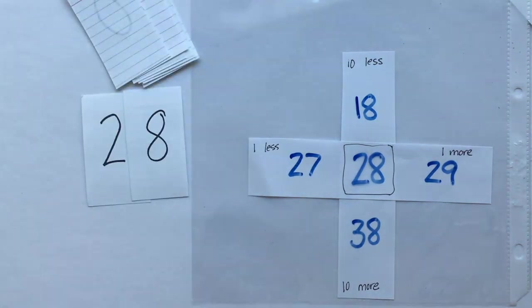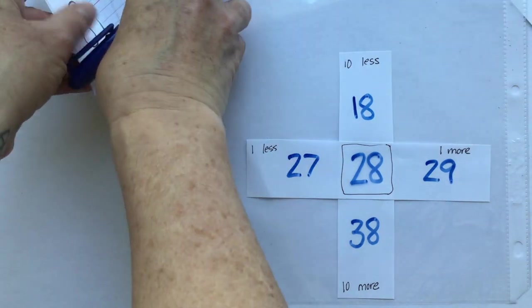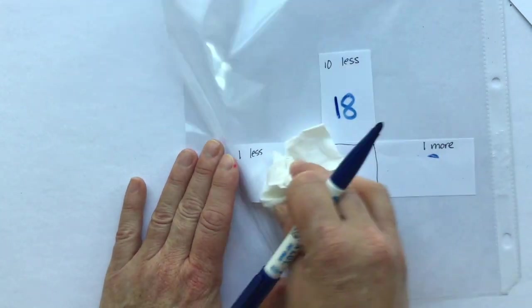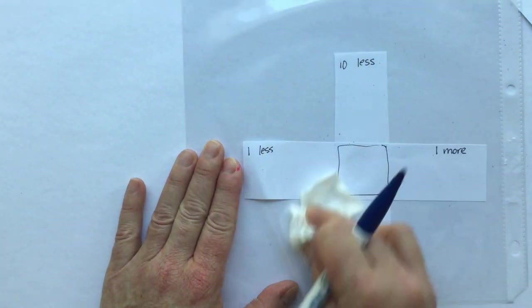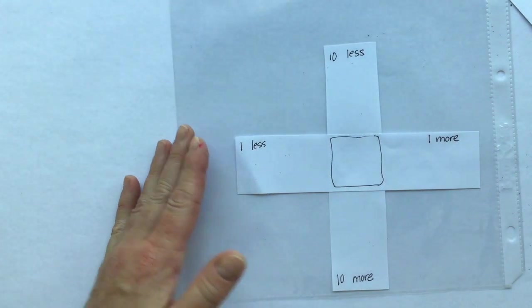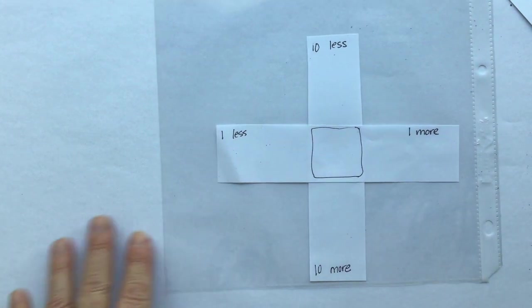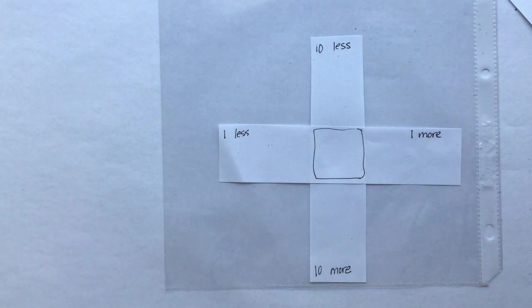All right. That's today's math lesson. Keep making two digit numbers and be able to say 10 more, 10 less, one more, one less than any number on the hundreds chart and be able to explain your thinking. If someone asks you, how do you know it's 10 more? How do you know it's 10 less? How do you know it's one more? How do you know it's one less? Be able to explain your thinking.